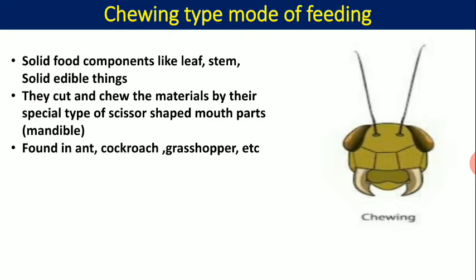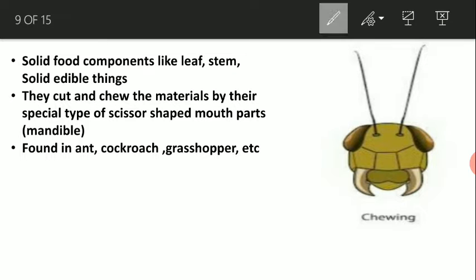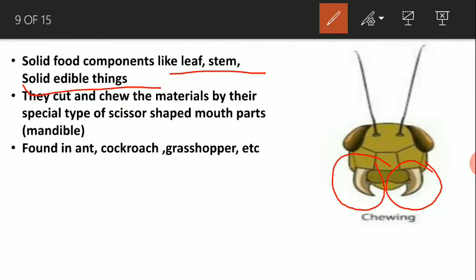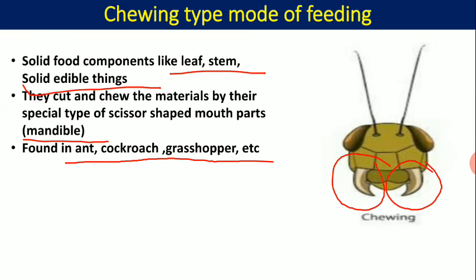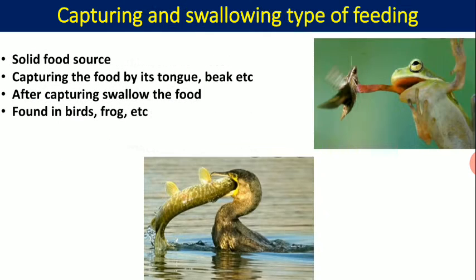In the chewing type, the food component is solid — it may be a leaf, stem, or other solid edible material. The organism possesses special structures involved in cutting and chewing the food material, known as mandibles. This type of feeding mechanism is found in cockroaches and grasshoppers.